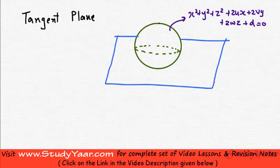Now let's learn about a tangent plane. What is a tangent plane? A tangent plane is essentially a plane which intersects the sphere at a single point.